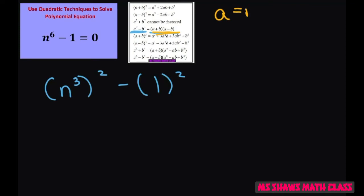Our a would be n cubed and our b is 1. And when you do that, you're going to get n cubed minus 1 times n cubed plus 1 equals 0.